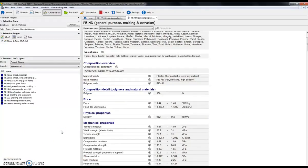So here I am within the Polymer Level 3 database. And I've created a custom subset which is only picking up polyethylene grades. And here I have 11 grades of polyethylene.